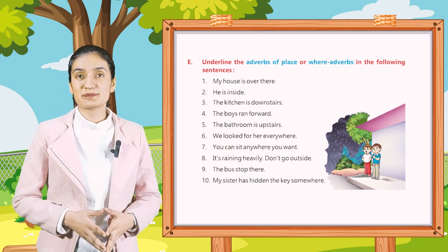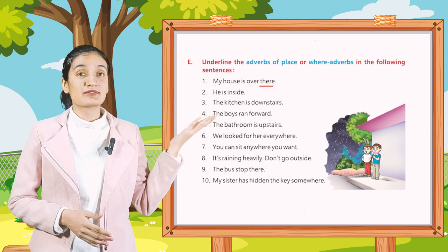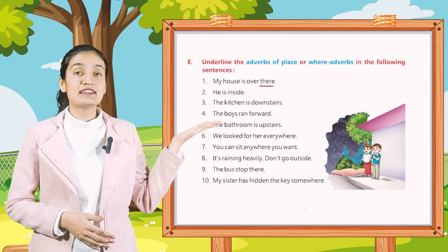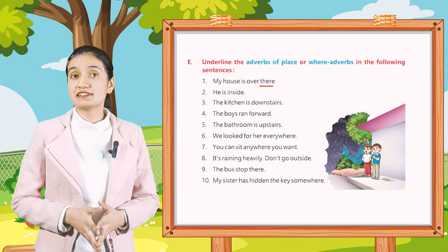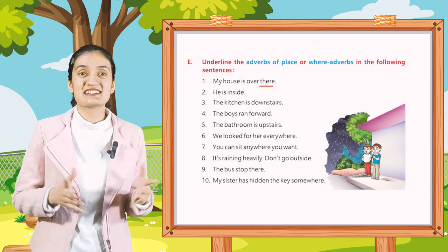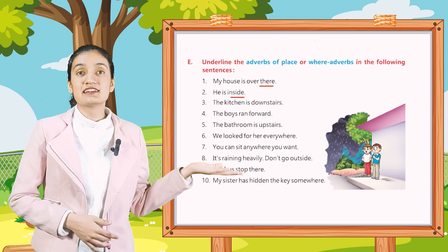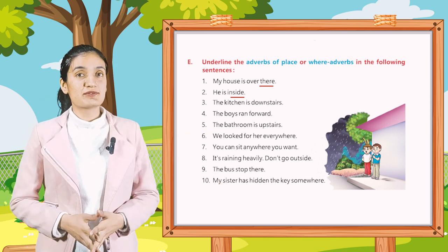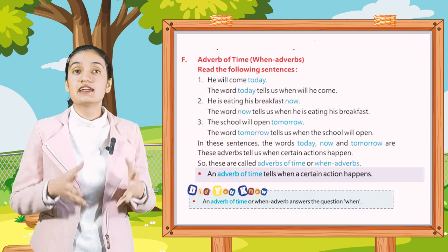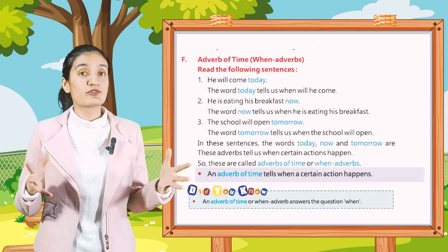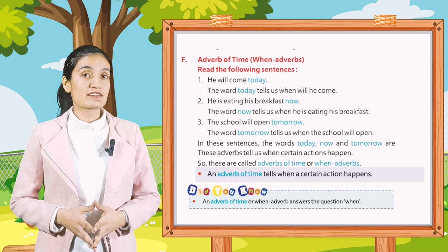First: My house is over there — underline 'there'. Second: He is inside — underline 'inside'. Similarly, underline the other adverbs accordingly. Now, Part F: Adverbs of Time — when adverbs. Read the following sentences.